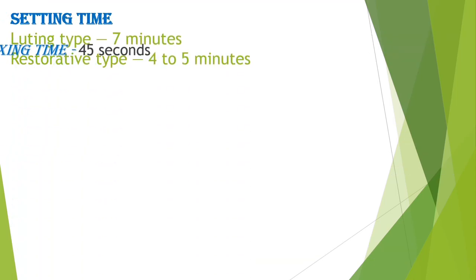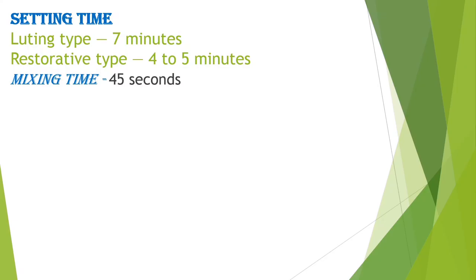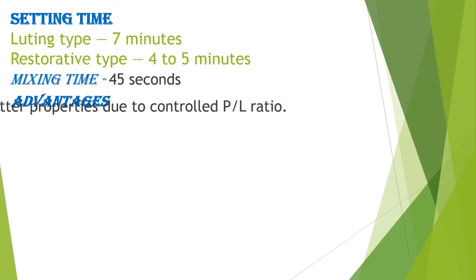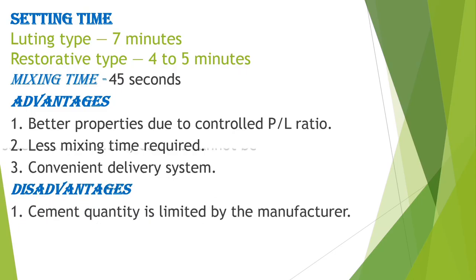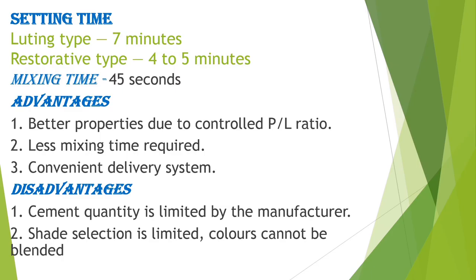Setting time: luting-type GIC takes around 7 minutes to set, restorative type takes 4 to 5 minutes, and mixing time is around 45 seconds. Advantages of capsule systems include less mixing time, convenient delivery, and better properties due to controlled powder-to-liquid ratio. Disadvantages include limited cement quantity set by the manufacturer, limited shade selection, and colors cannot be blended.